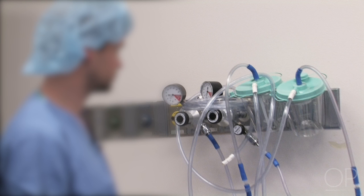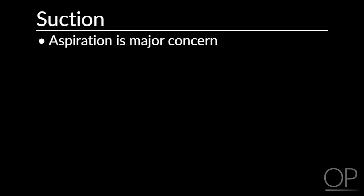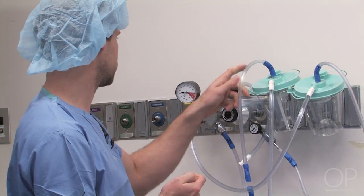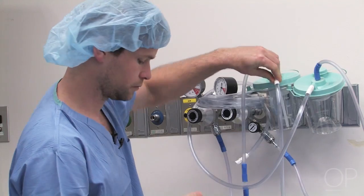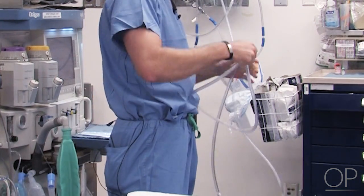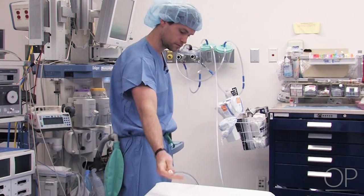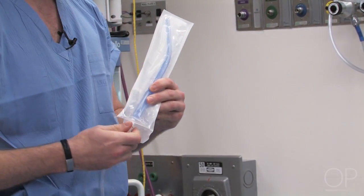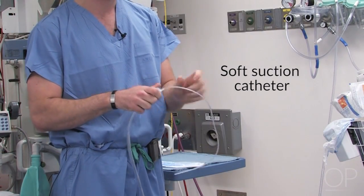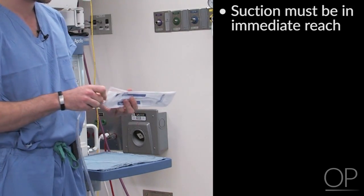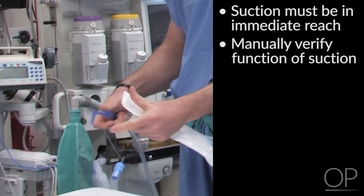Suction is an essential piece of equipment that must be immediately available. Aspiration is always a major concern and the ability to manage secretions is key in successful airway management. The vacuum source must be located and verified to be functional. Tubing connected to the source should be inspected for obvious defects, leaks, obstructions, or kinks, and must be of sufficient length to reach the patient with enough slack to manipulate freely. An appropriate suction device, such as a Yankauer suction tip or soft suction catheter, must be kept in immediate reach of the provider. Manual verification of functioning suction should always be performed.